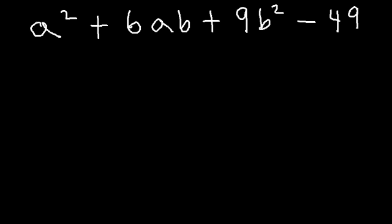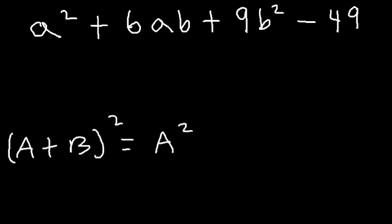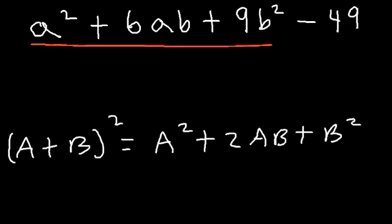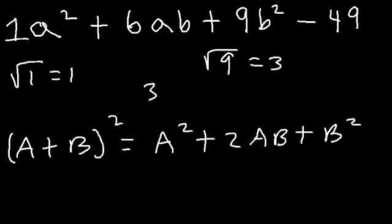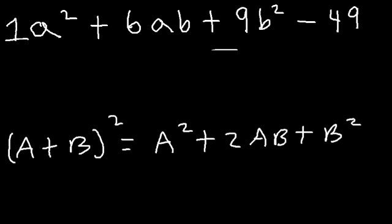It helps to know the formula: (a + b)² equals a squared plus 2ab plus b squared. What we have here is a perfect square trinomial. To identify one, take the square root of the leading coefficient and the square root of the last term — you get 1 and 3. If you multiply 1 and 3 and get a number that's half of the middle coefficient, it's a perfect square trinomial. So in this case, a is the same as lowercase a.